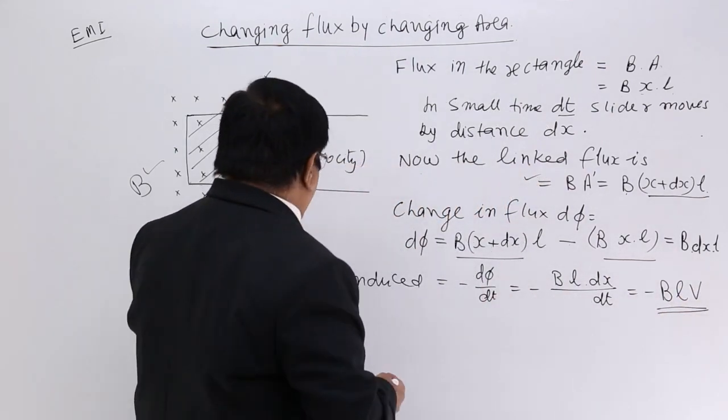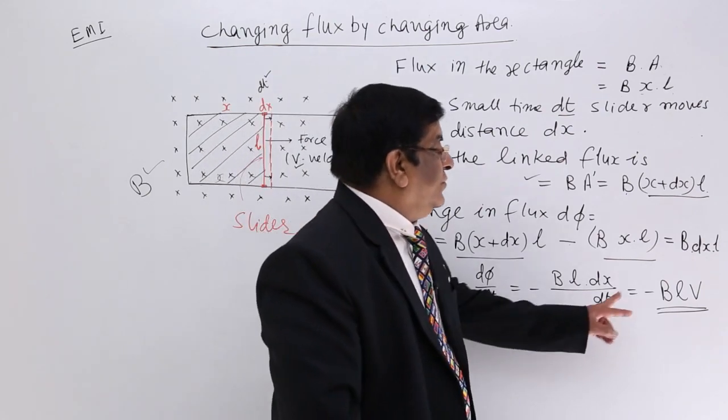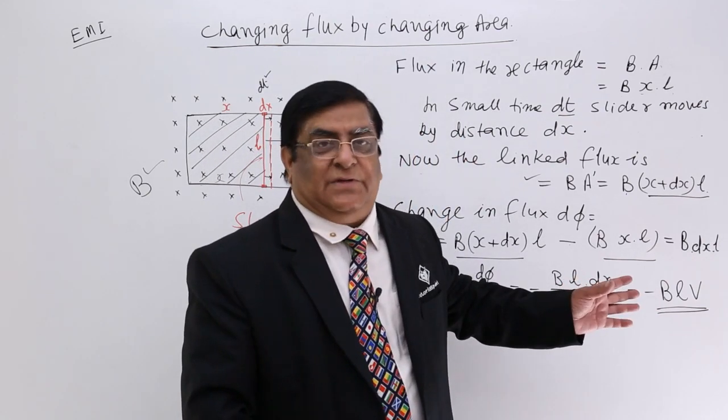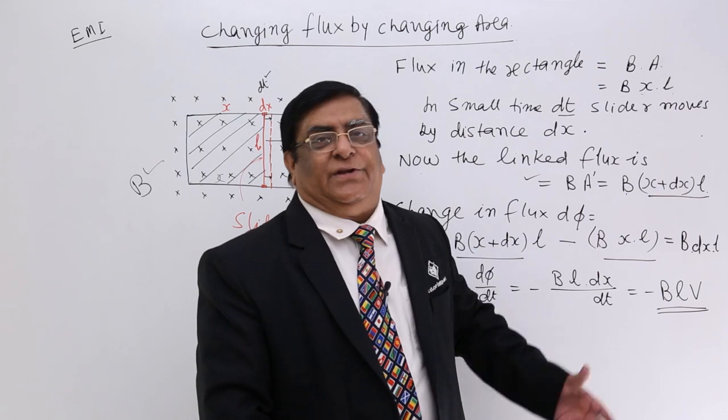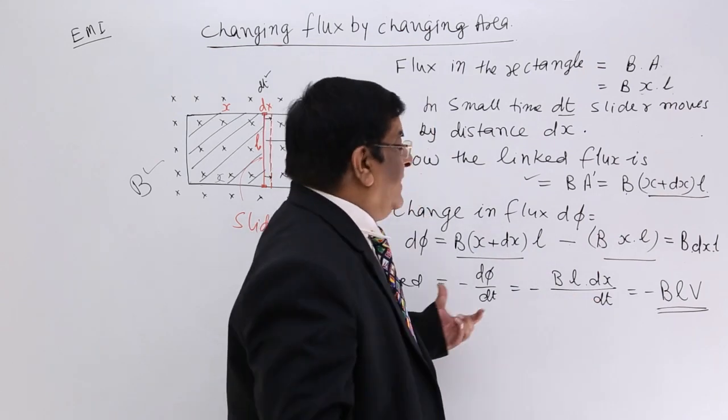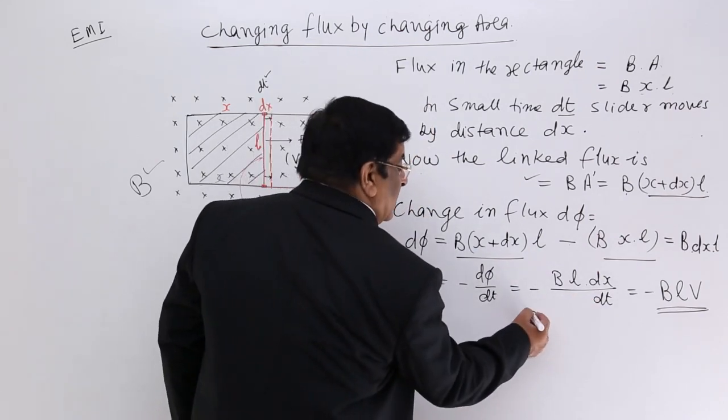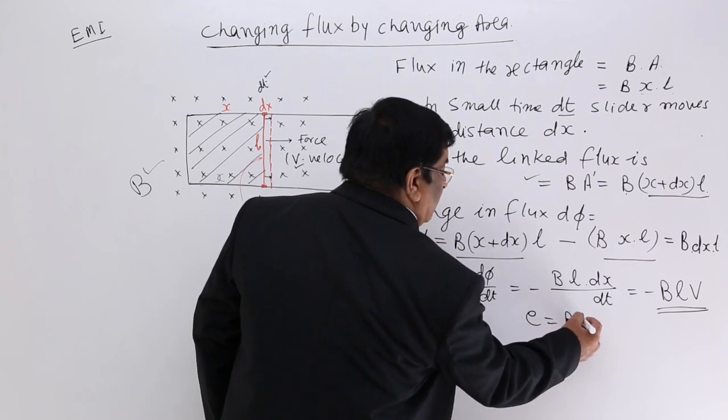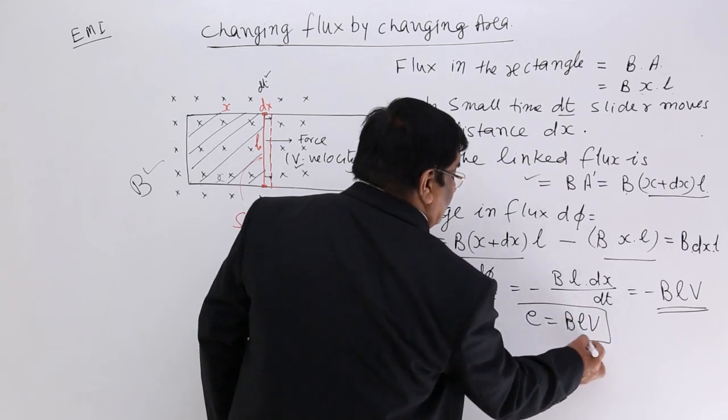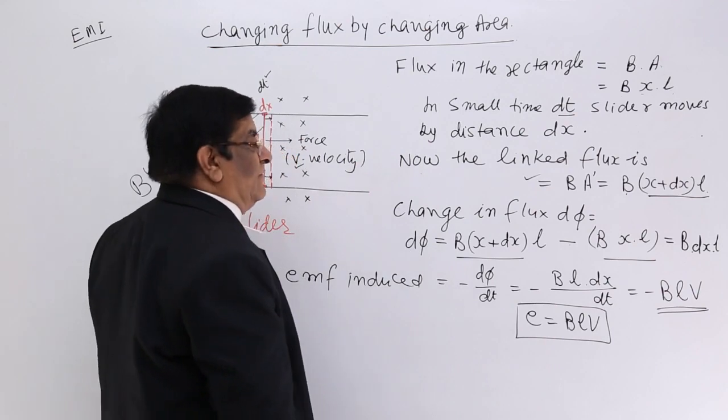This is the formula for emf induced and this minus shows that it is opposite in direction, that is according to Lenz's law. So what is the magnitude of the emf? The magnitude of the emf is BLV. This is the magnitude of the emf.